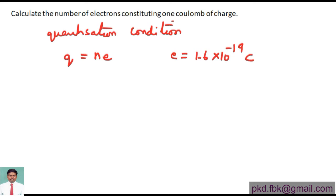To calculate how many charges one coulomb contains, we use n = Q/e. Since we're interested in one coulomb, we replace Q with 1 coulomb divided by e, the charge of an electron, which is 1.6 × 10^-19 coulombs.